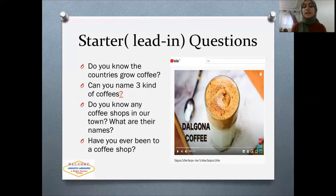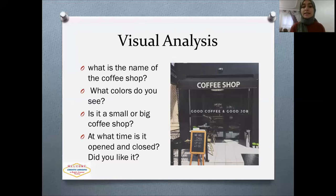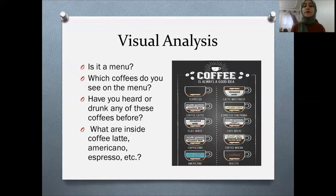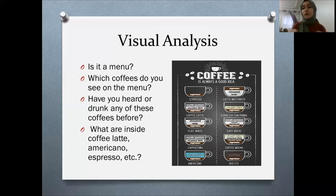I asked if they knew any coffee shops in our town, what their names were, and if they had ever been to one. For visual analysis, I took a photo of a famous coffee shop in our town and asked students questions to analyze the photo and the language they see: the name of the coffee shop, what colors they see, whether it's small or big, and the opening and closing times. Then I showed them the menu and asked which coffees they see, if they'd ever heard or tried any of them, and to tell me the ingredients of each coffee, since the ingredients are written on the menu.